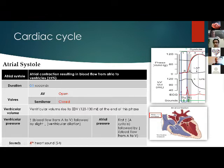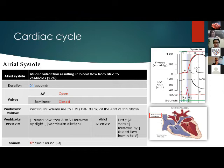The cardiac cycle usually starts with atrial systole, with a duration of 0.1 second. The atrium contracts to push the remaining blood into the ventricle, contributing approximately 25% of ventricular filling. This has clinical implications in patients with atrial fibrillation. At this time, both AV valves are open and the semilunar valves are closed, and the ventricular volume reaches its maximum of 120 to 130 milliliters at the end of this phase.